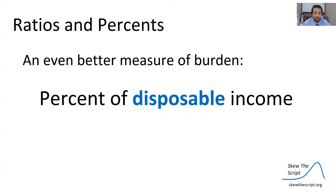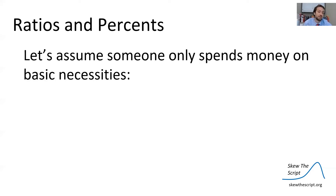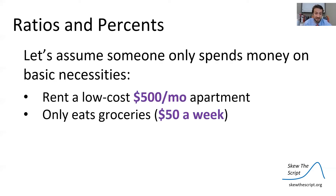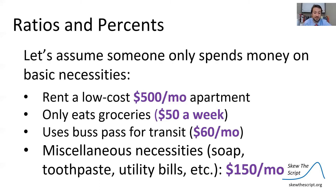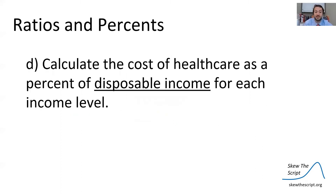An even better measure of this burden is the percent of disposable income. Disposable income is basically the income left over after spending on basic necessities. Let's assume someone only spends money on basic necessities: a low-cost apartment for $500 a month, groceries at $50 a week, a bus pass for $60 a month, and miscellaneous necessities like soap and toothpaste at $150 a month. That equals a staggering total of $11,120 per year just for the most basic necessities. So now we should calculate the cost of healthcare as a percent of disposable income for each income level.